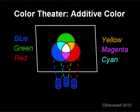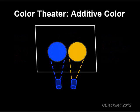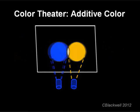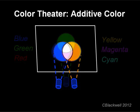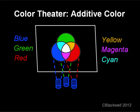Complementary colors are those that are opposite each other on the color circle — for example, blue and yellow, or red and cyan. One significant property of complementary colors is that when added together, the result is white. For example, here are blue and yellow added together, producing white. The same result occurs with cyan plus red, and magenta plus green.